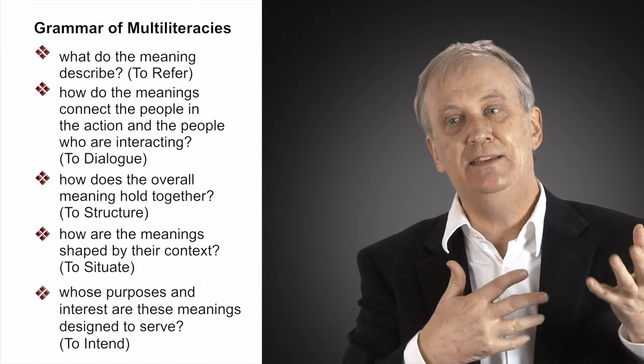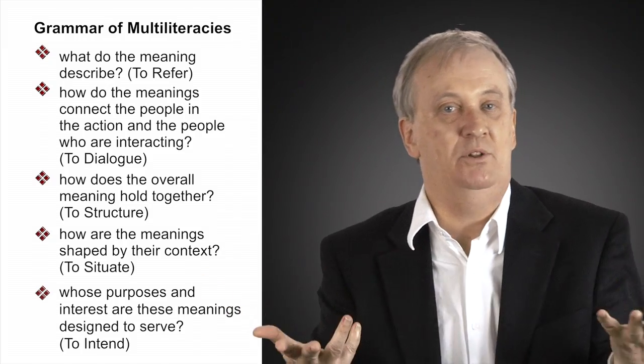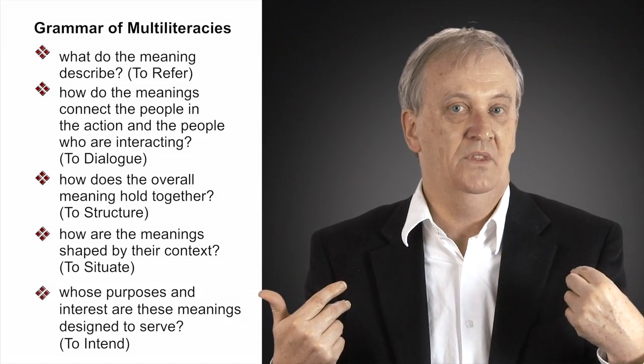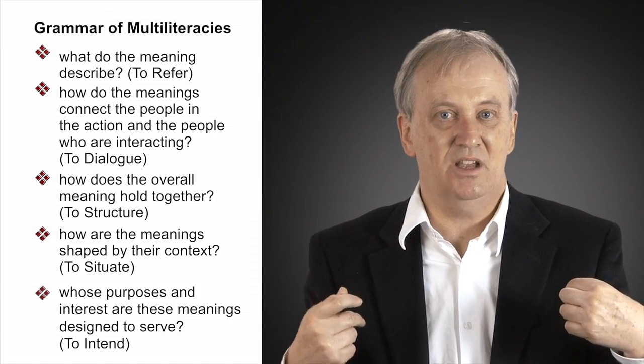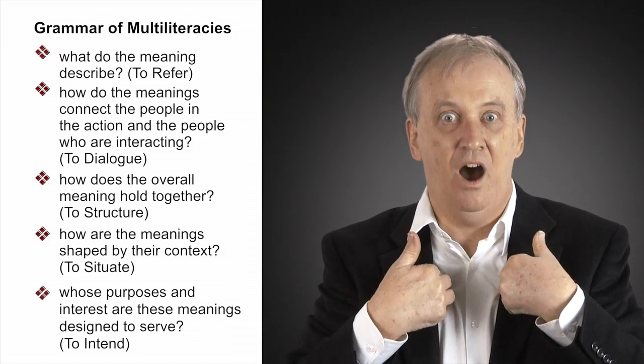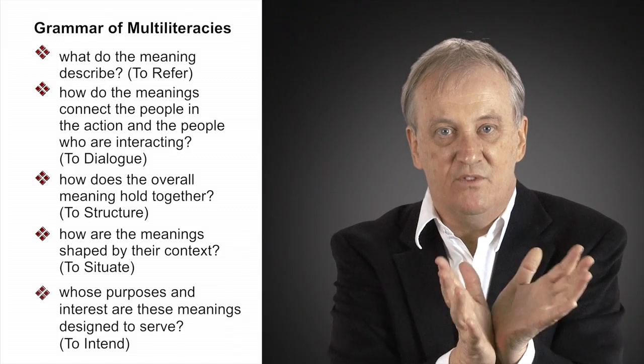How do the meanings then connect the people in the action and the people who are interacting? So for example, if I write something which doesn't say you and I, doesn't use the first person, it speaks very objectively.